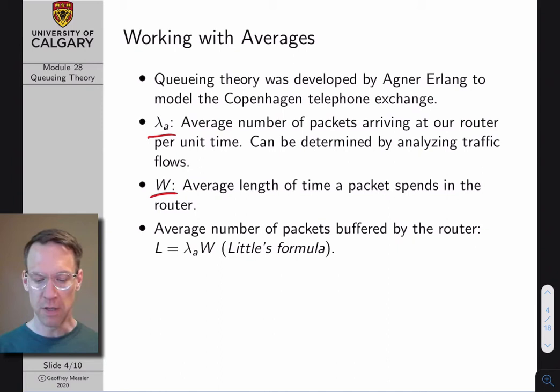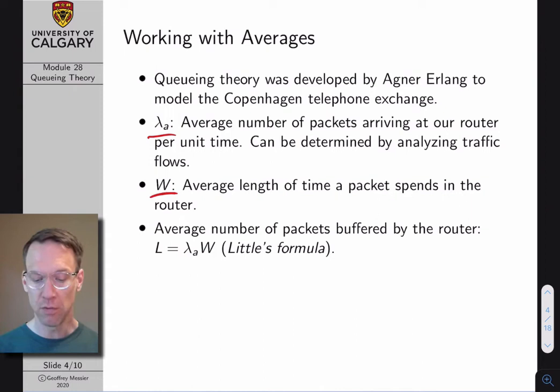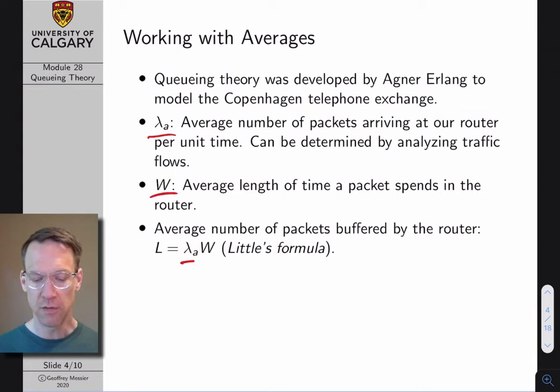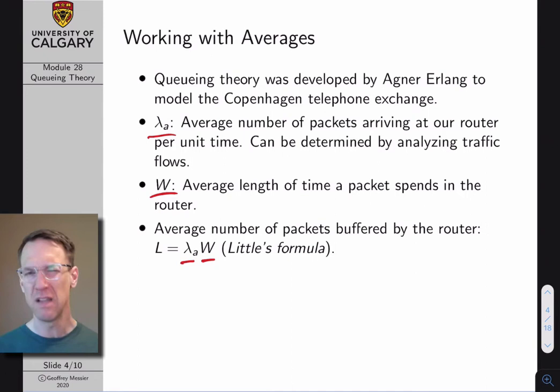Assuming we can determine W, there's a very simple formula to calculate the average number of packets our router will buffer at any time. This is called Little's formula — named after Little, though it is indeed a very little formula. The average number of packets buffered by the router is equal to the number of packets arriving per unit time multiplied by how long packets spend in the router. There's a proof, but it's relatively intuitive.